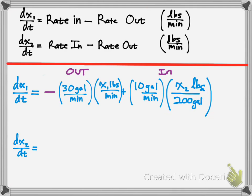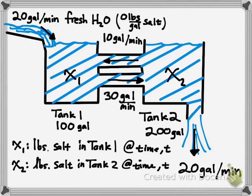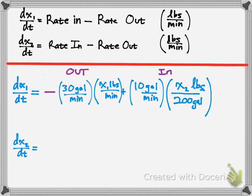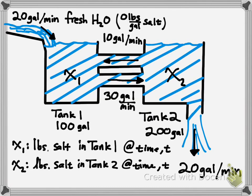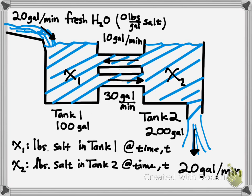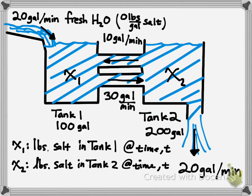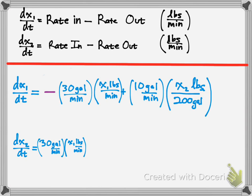Now we're going to do the same thing for the rate leaving and entering x2. For x2, let's calculate what's coming in first. What's the only thing coming in x2? That would be the 30 gallons per minute at x1 concentration of salt. Then we've got to calculate what's coming out, because we have the 10 gallons per minute leaving and the 20 gallons per minute leaving as well. To figure that out, we have to subtract since it's rate out.